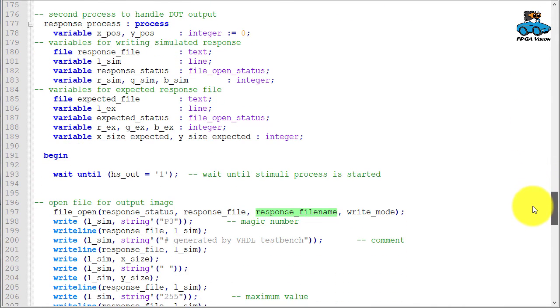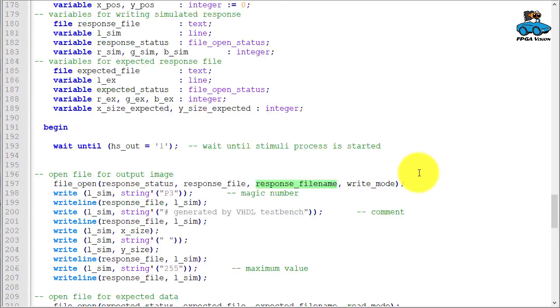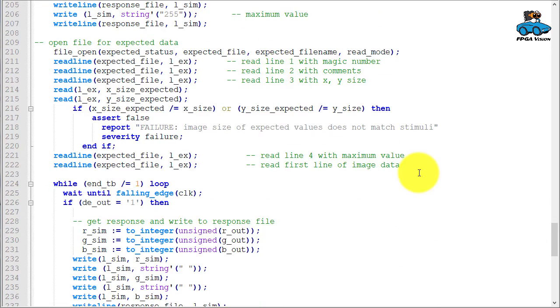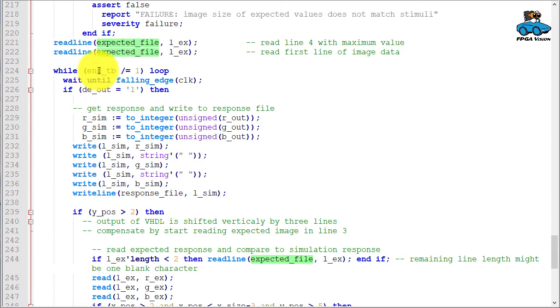And here we have the response process where we handle the output from the design under verification. Here's the file for writing the response as we had earlier. And then we open the file for the expected result. We read the header and then we have a loop for all valid pixel until the test bench ends.